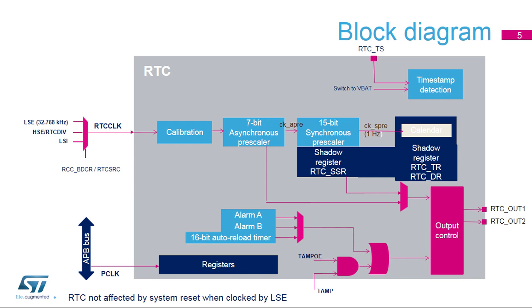The disadvantage of this mode is that when exiting stop or standby mode, the software must wait for a synchronization delay to ensure that the shadow registers are updated with the last calendar register values. This synchronization delay can be up to two RTC clock periods. When the bypass shadow register's control bit is set, the actual calendar registers are read directly. The advantage is that there is no need to wait for the synchronization delay. The disadvantage is that the read values can be false or inconsistent due to synchronization issues, so they must be read twice and compared with previous read values to ensure they are correct and coherent.